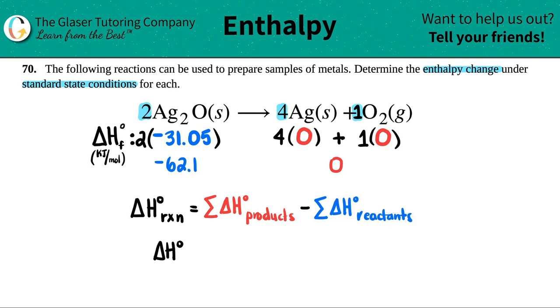So the change in enthalpy, the delta H, how much heat energy is going to be produced, is the products, in this case it's 0, minus the reactants, which is negative 62.1. And remember, if you minus by a negative, it's keep change change, so I technically add by a positive. So my delta H for the reaction would be 62.1. So it's an endothermic reaction. The units, if you're using the charts, are kilojoules per mole. And you're done.